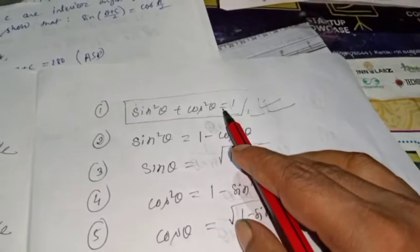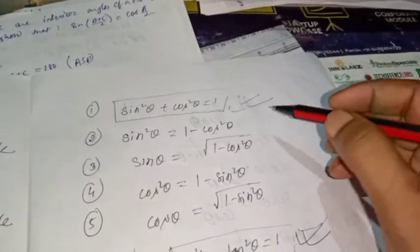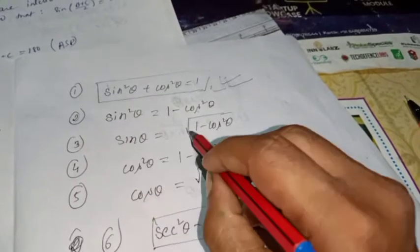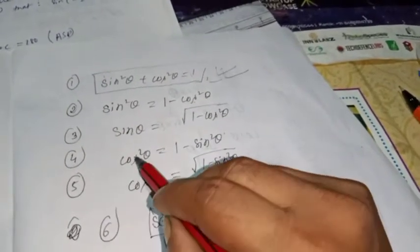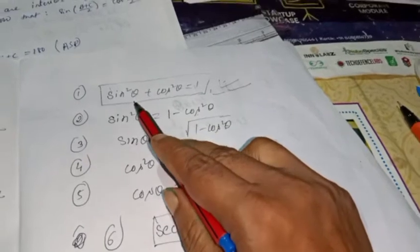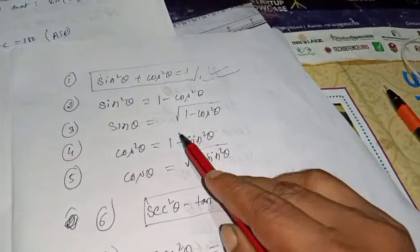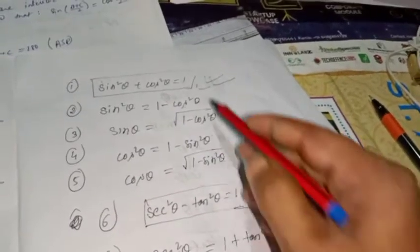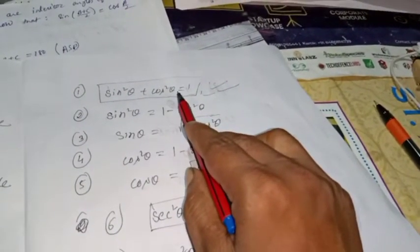From the first identity, sin²θ + cos²θ = 1, we can derive several related relations. If you transfer cos²θ to the right-hand side, you get sin²θ = 1 - cos²θ, so sin θ = √(1 - cos²θ). Similarly, if you transfer sin²θ to the right-hand side, you get cos θ = √(1 - sin²θ).